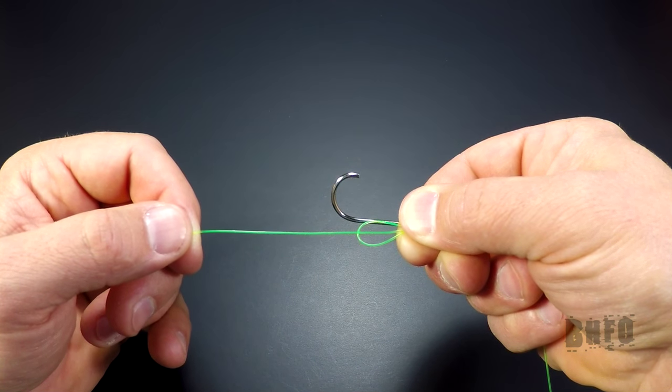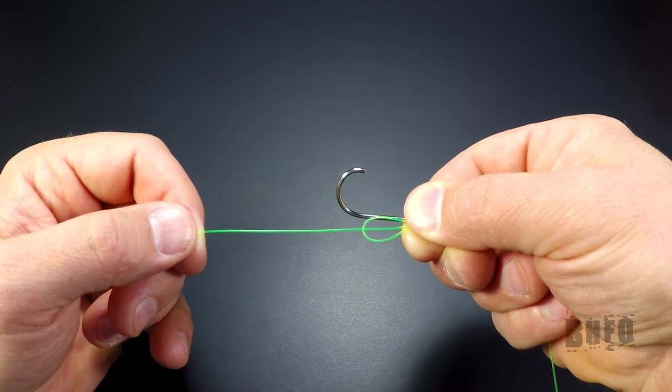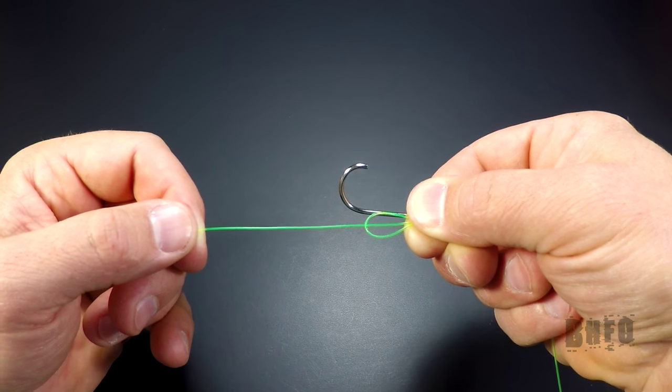Now, it's very important when tying fishing knots to lubricate the line before cinching up. The reason is friction could cause line burn and weaken or damage the line. So always lubricate your knots. The best way is to run the knot through your mouth and use saliva.